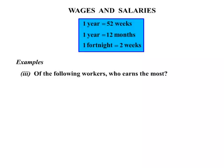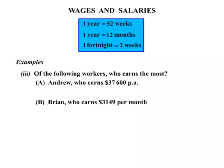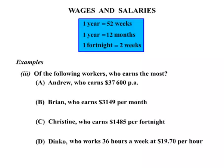Our third example: of the following workers, who earns the most? We've got Andrew who earns $37,600 per annum — per annum means per year. Brian who earns $3,149 per month. Christine earning $1,485 per fortnight. And finally Dinko who works 36 hours a week at $19.70 per hour. We're given amounts they earn at different rates of time.